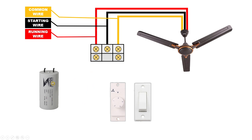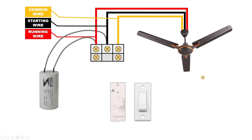Now you have to connect the capacitor. Connect this capacitor between the running wire and the starting wire — one wire of the capacitor with the starting wire and the second wire with the running wire. Now on the terminal block, on the side where three terminals are there, connect the starting wire to the middle terminal. If you connect the starting wire at the middle terminal, the direction of the ceiling fan will always be clockwise.